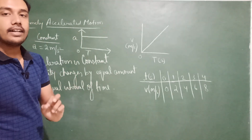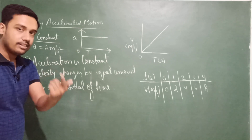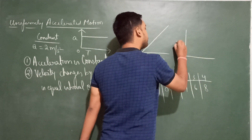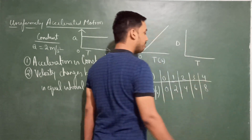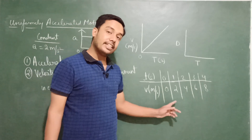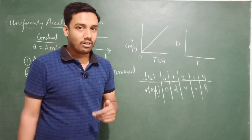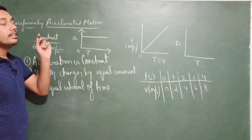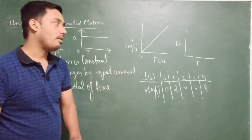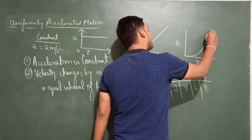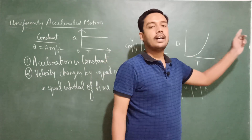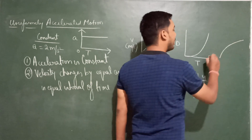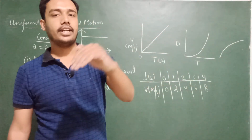This is all about uniformly accelerated motion. Now if someone asks for the distance-time (dt) graph — note carefully: velocity is changing, it is not constant. Since velocity is changing, what type of motion is it? Non-uniform. And for non-uniform motion, the distance-time graph is always a curve. An upward curve shows that velocity is increasing; a downward curve means velocity is decreasing.